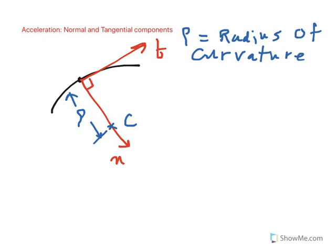Now let me show how we describe acceleration in this coordinate system. In general, acceleration has two components: a component along the tangential axis — either in the positive or negative direction — and a normal component of acceleration. We call these a sub-t and a sub-n respectively.